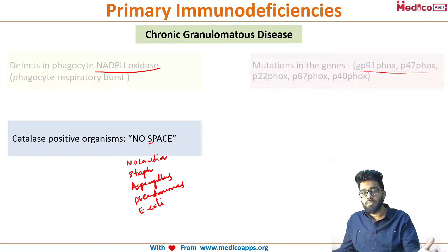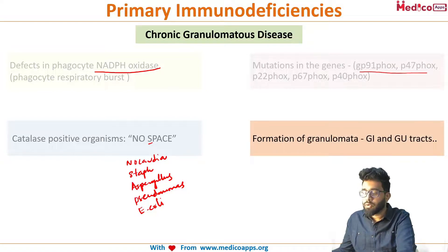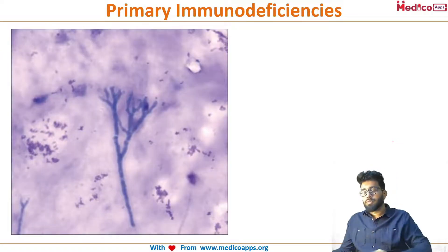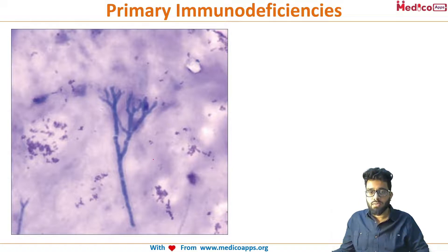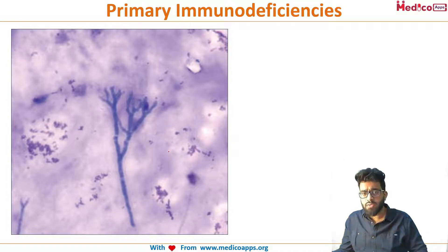In CGD you have catalase-positive organism infections and also granuloma formation in various organ systems like the gastrointestinal and urinary tract. For example, if this child had pneumonia and you collected sputum and put special stains, you might see a filamentous structure — probably a fungus. When you see septate hyphae at an acute angle (less than 90 degrees), that is always Aspergillus.